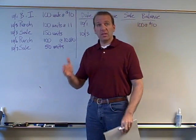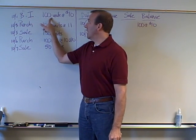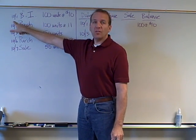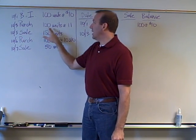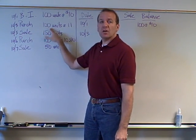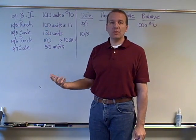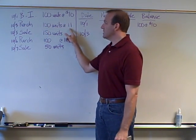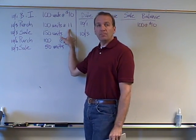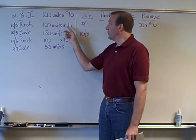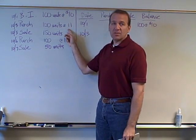The information we're going to start with on all three videos, when we go through all three of these methods, is this. We have beginning inventory of 100 units on 10-1, so October 1st. October 3rd, we purchase 100 more units. So if we started with 100 and then purchased 100 more, we now have 200 units. But notice the price has gone up — that happens frequently. The price was $10, and now it's $11.